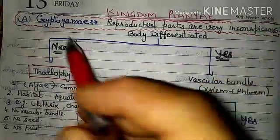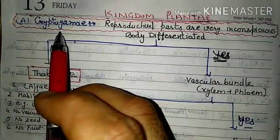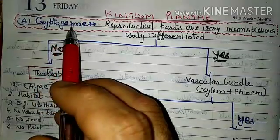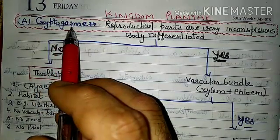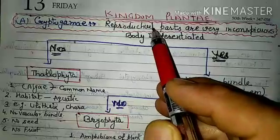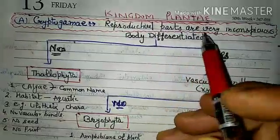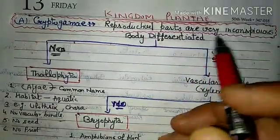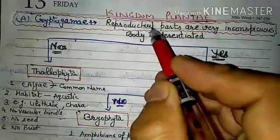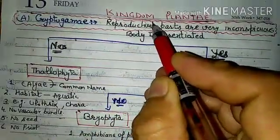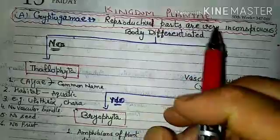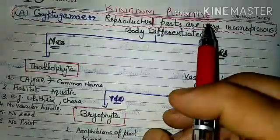Kingdom Plantae has two parts. The first is Cryptogamia. Cryptogamia means the reproductive parts of these plants are very inconspicuous — they are very small and not easily visible.